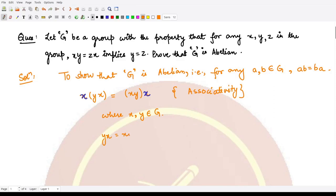So using this property, we can write it like this: y*x is equal to x*y. Because as x*y = z*x implies y = z, using the property here we have y*x is equal to x*y.